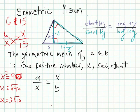So you can see that this altitude is the geometric mean of these two triangles. Let's look at the next slide.